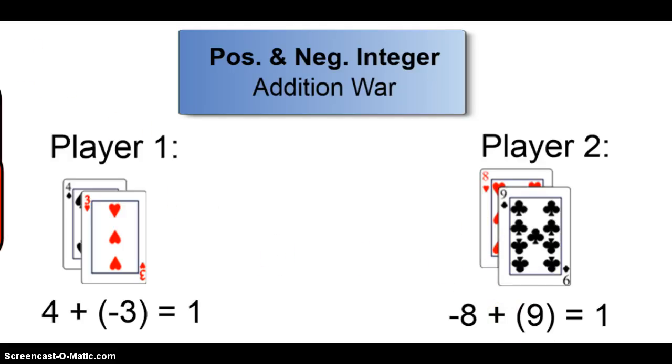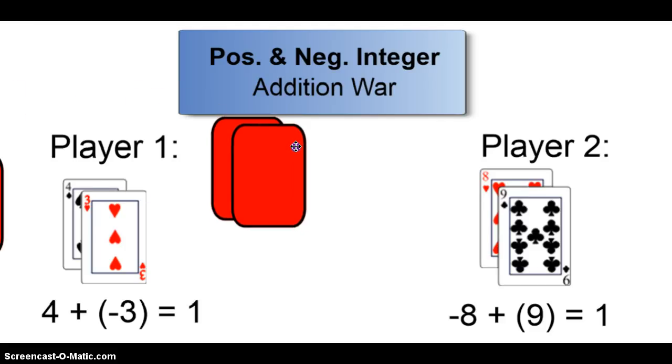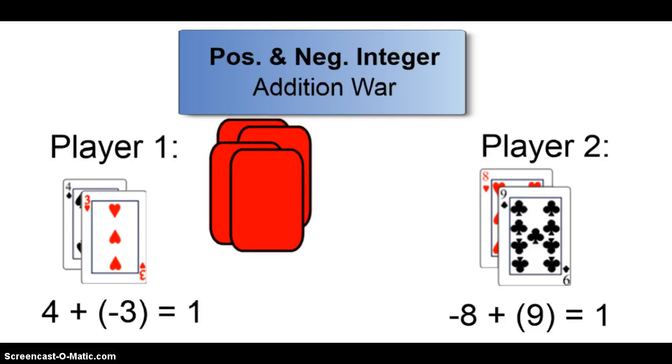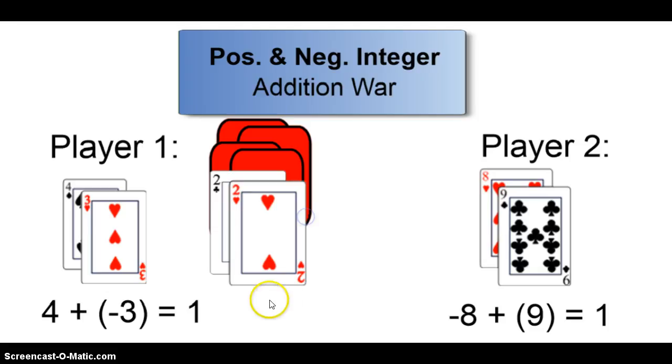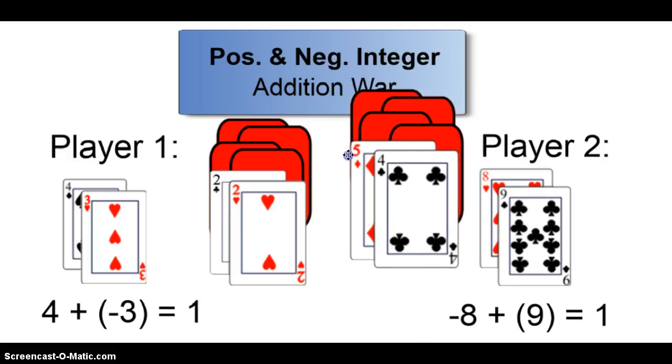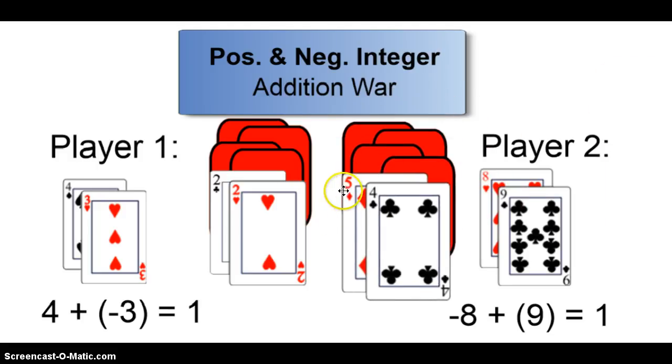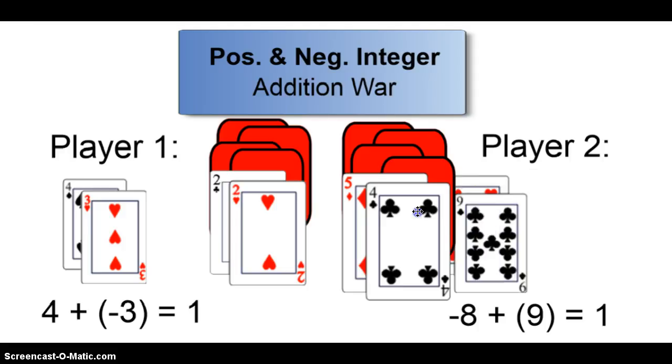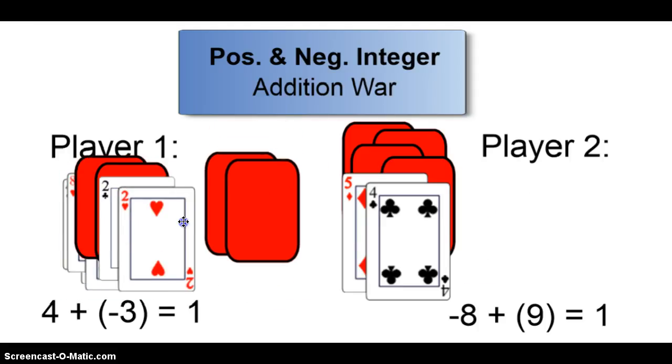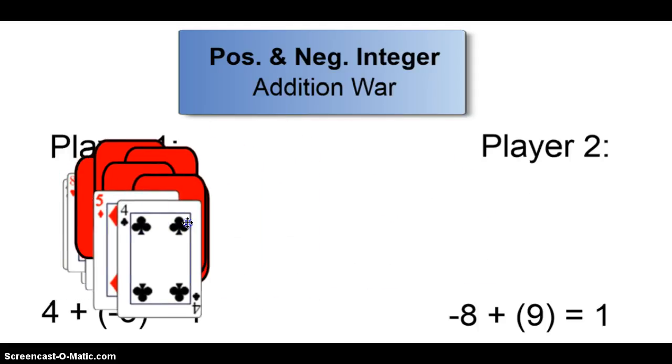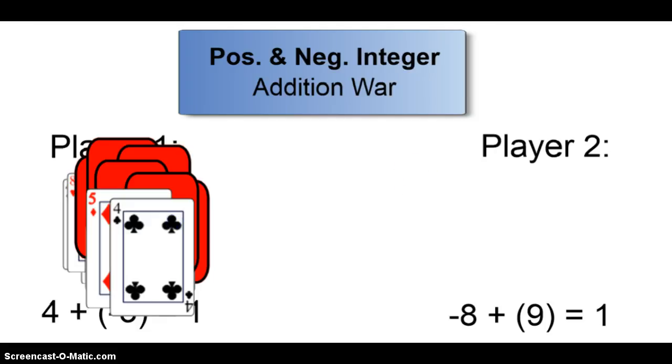So in war, this is called war, that's what the game's named after. And here's what you do. You flip down two cards face down, two cards face down, then two cards face up, and you add these. Two plus a negative two would be zero. The same player does two down, two down, two up. Player two does two down, two down, two up. This would be negative five plus four would be negative one. So we got zero to negative one, and the zero is greater. So player one gets to keep all of these cards, every last one of them. So wars are really how you kind of win this game, but everybody gets some good practice in, so it's a great game.